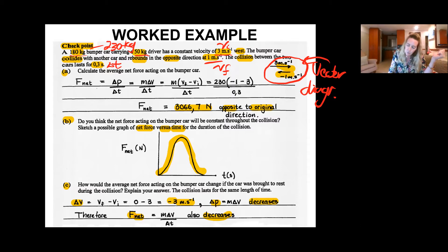Calculate that net force acting on the bumper car. Now, of course, we've got all the information that we need. We've got the mass of the car and the driver. We've got the final and initial velocities and we've got the change in time. So we can expand that formula into M times VF minus VI, close your bracket, divided by delta T.